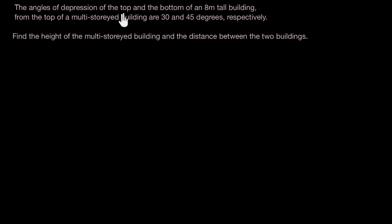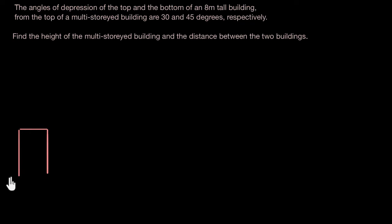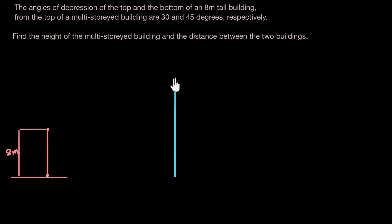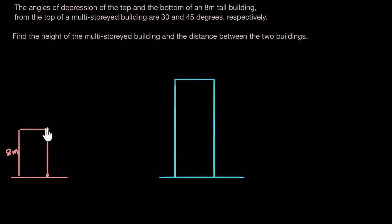The angles of depression of the top and the bottom of an eight meter tall building — let me draw that. I have an eight meter tall building over here, and what I know is that this building is eight meters tall. The angles of depression of the top and the bottom of an eight meter tall building from the top of a multi-storied building. It's clearly taller because there are angles of depression for both the top and the bottom of this eight meter tall building.